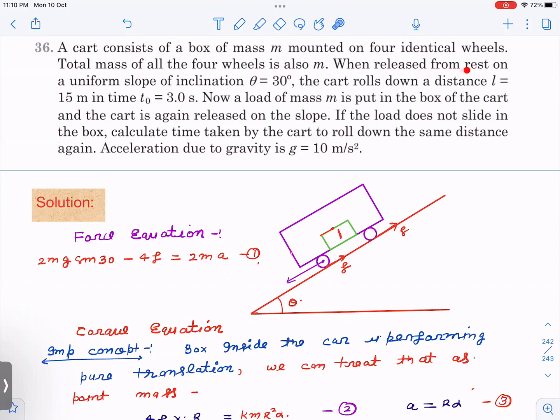When released from rest on a uniform slope of inclination theta equal to 30 degrees, the cart rolls down a distance l equal to 15 meters in 3 seconds. Now an additional load of mass m is put in the box of the cart and the cart is again released. It is given that the load does not slide in the box. Calculate the time taken by the cart to roll down the same distance again. g is given as 10. This question is based on a very important concept.